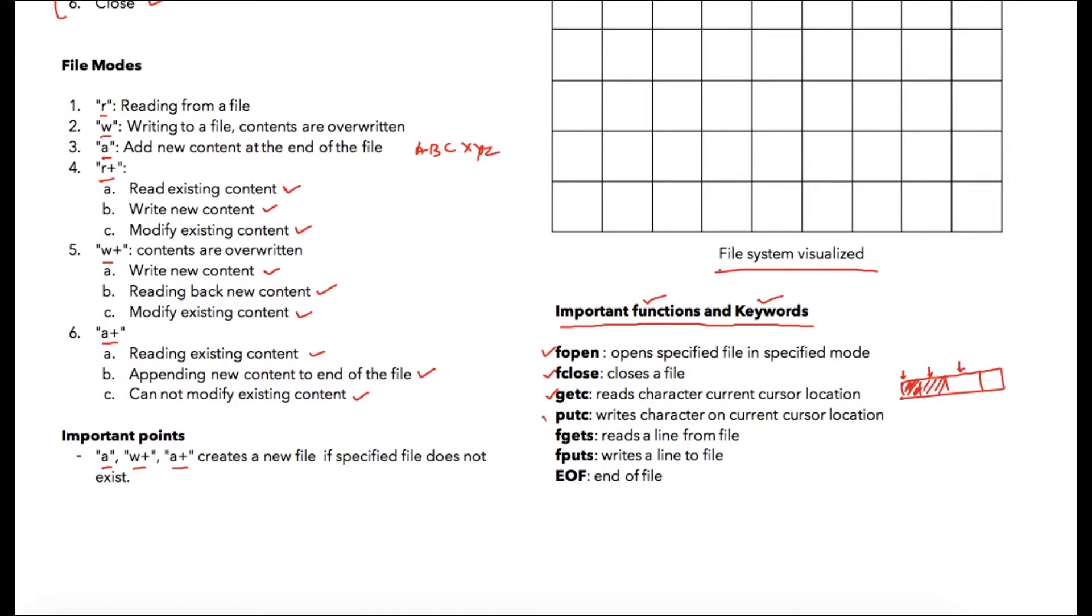Then we have putc as a function. So it will write data to the current cursor position. Once the data is written cursor will move on to the next location. fgets reads line from the file. So your file usually have multiple lines into it so it will read line by line. Similarly fputs is a function which writes line completely unlike putc which writes character by character.